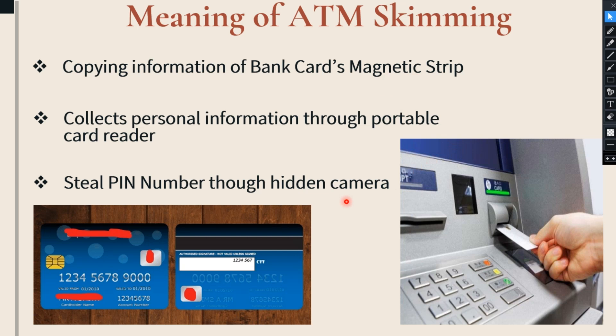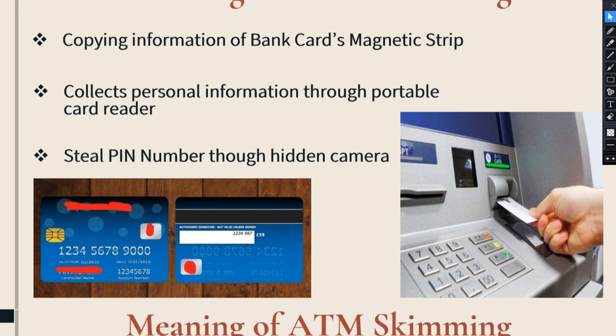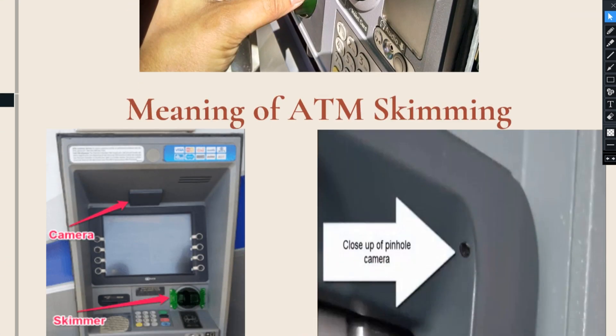Now, after collecting this information, what is the next procedure? The next procedure is card cloning. Whatever procedure was explained up to now is the procedure of ATM skimming — how the fraudsters copy and collect the information of the customers. After collecting this particular information, the fraudsters will now perform the procedure of card cloning.